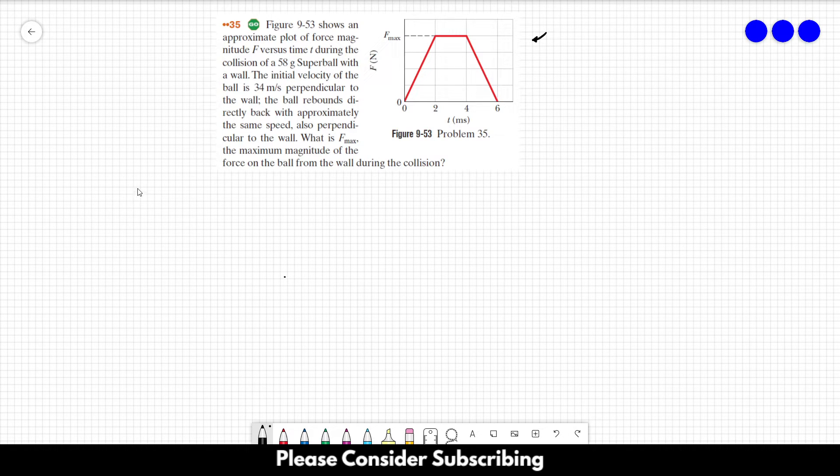Okay, so let's make some drawing here. Let's suppose that this is the wall. There is a ball that's going towards the wall with an initial velocity of 34 meters per second.